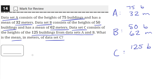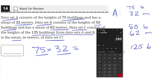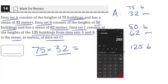What we need to do is find the total heights of all the buildings in each of the data sets. We can do this by multiplying the number of buildings by the mean height, because multiplying the number of buildings by the mean height gives us all the heights added together — since each building has a mean height of 32. So 75 times 32 will give us the total height of all buildings in data set A.